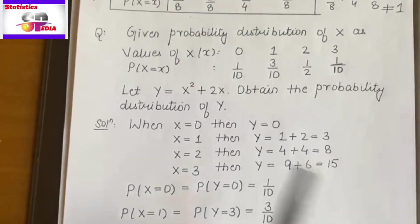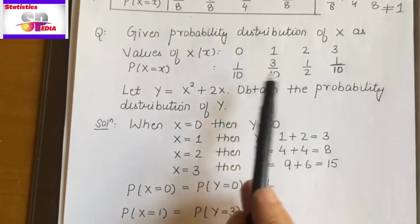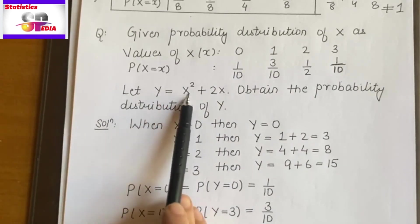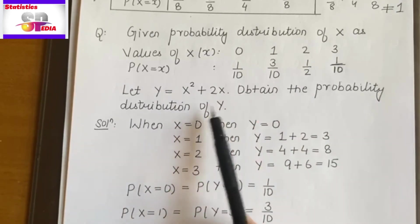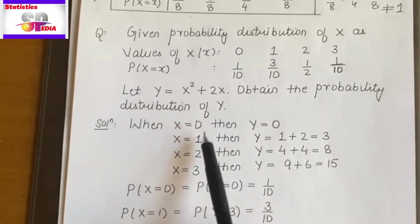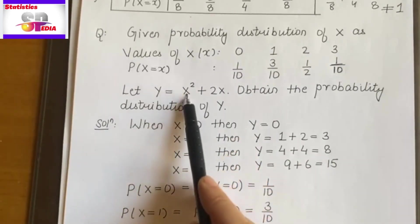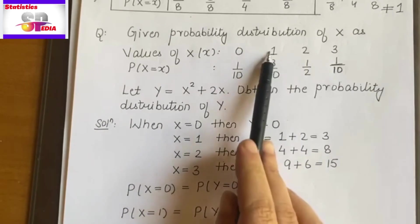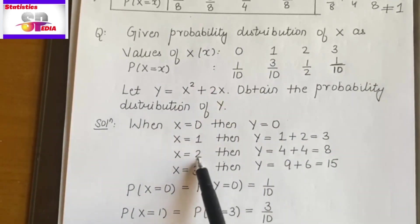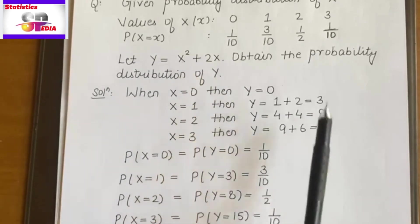Now move to the second question. Values are given — again countable, so X is discrete — with corresponding probabilities. A new random variable Y is introduced as Y = x² + 2x, and we are asked to obtain the probability distribution of Y. Since X is discrete, Y is also discrete. We compute Y values: when x=0, Y = 0; when x=1, Y = 1+2 = 3; when x=2, Y = 4+4 = 8; when x=3, Y = 9+6 = 15.